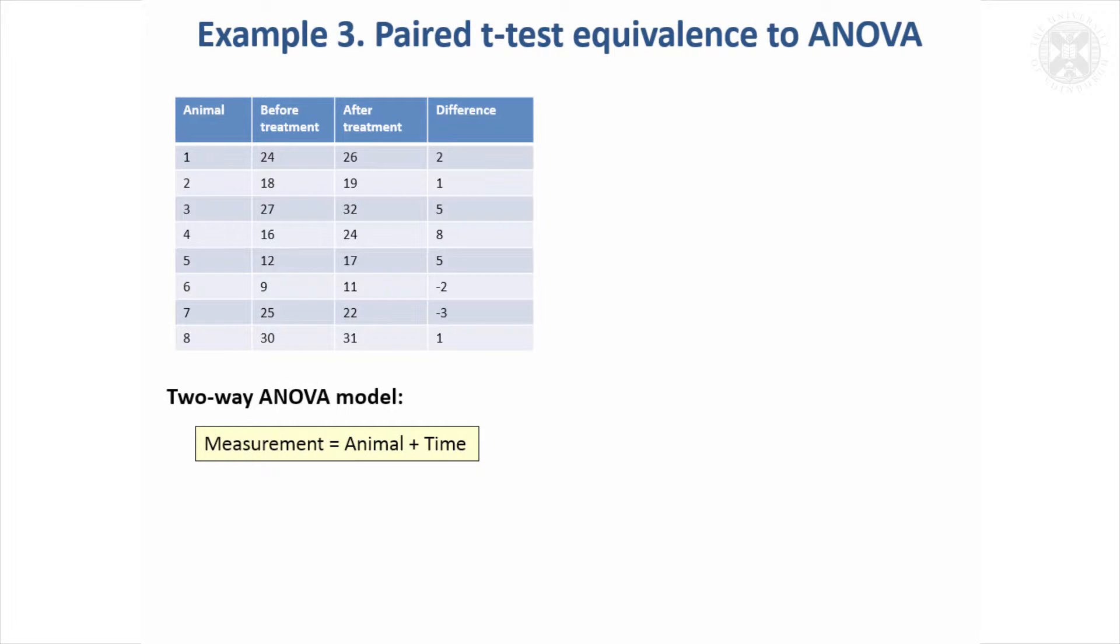The last thing to say about ANOVA is that we looked at the paired t-test last time, and to show how it all fits together, a two-way ANOVA can give you exactly the same results as a paired t-test.